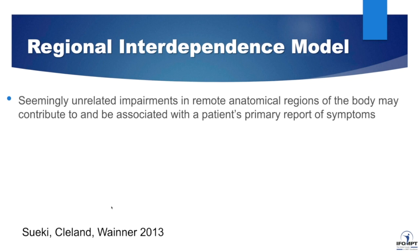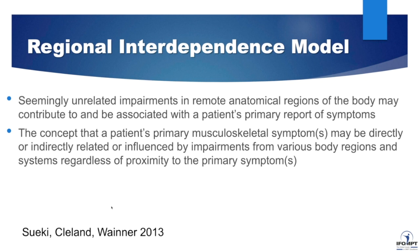The regional interdependence model is a term that was coined in 2007 by Suecki, Cleland, and Wainer, and there have been a few articles published since that time on this model. Simply put, what this model proposes is that seemingly unrelated impairments in different parts of the body may in fact be contributing to and associated with the patient's primary complaint or report of symptoms. This concept holds that the primary symptom may be directly or indirectly related to various impairments, regardless of how close those impairments are to the primary symptoms.